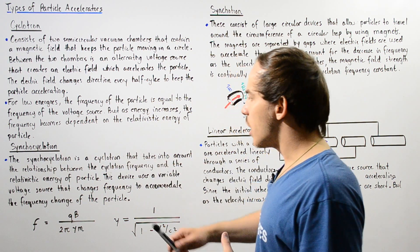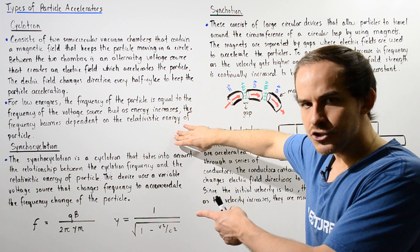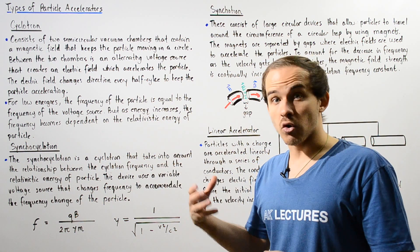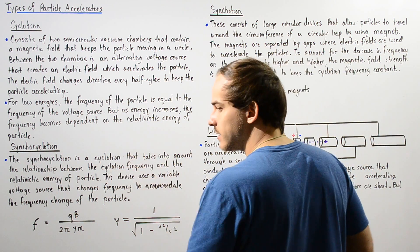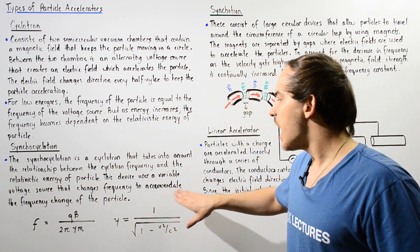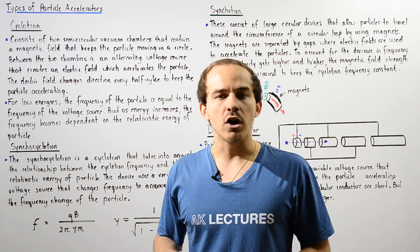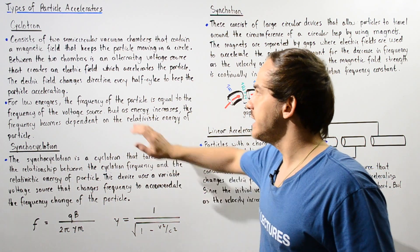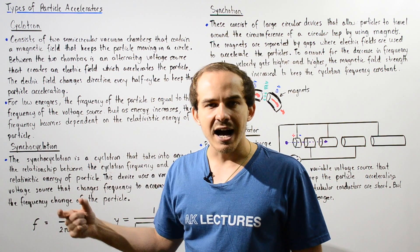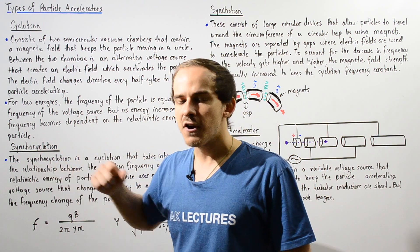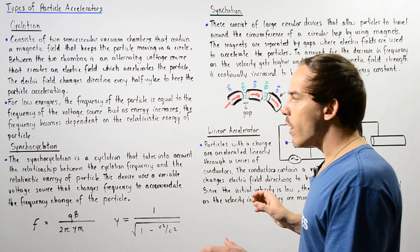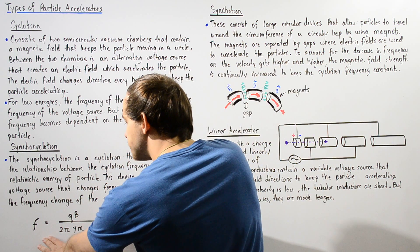The synchrocyclotron is a cyclotron that takes into account the relationship between our cyclotron frequency and the relativistic velocity or energy of that particle. This device basically uses a variable voltage source that changes its frequency to accommodate the decrease in frequency of our particle when the velocity increases. In the standard cyclotron, the frequency of the variable voltage source remained constant because the velocity wasn't great enough for the special theory of relativity to take effect. However, when the velocity increases, the frequency becomes different.